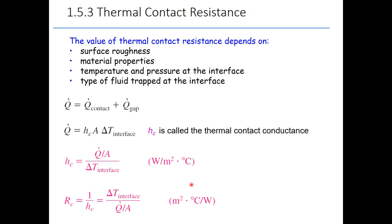The value of thermal contact resistance depends on surface roughness — different materials have different surface roughness. It also depends on material properties, temperature and pressure at the interface, and the type of fluid trapped at the interface, which can be air or any gas. In practice, grease is used to reduce the thermal contact resistance between two parts.